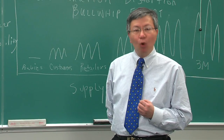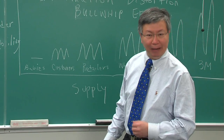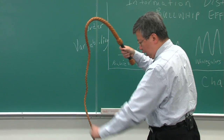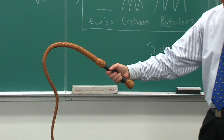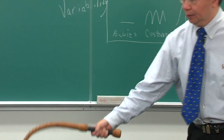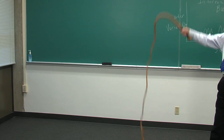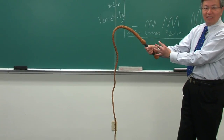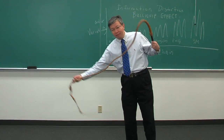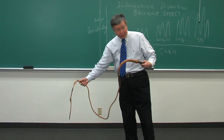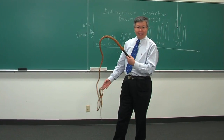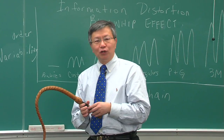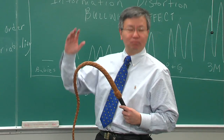Why is it called the bullwhip effect? Here is a graphical depiction of a bullwhip. As I crack the whip, the handle has only moved 60 degrees, while the tip of the whip has moved more than 360 degrees. That's exactly what happens — the market may have moved a tiny bit, but as demand information travels up the supply chain, your upstream suppliers may be seeing a much, much bigger swing.